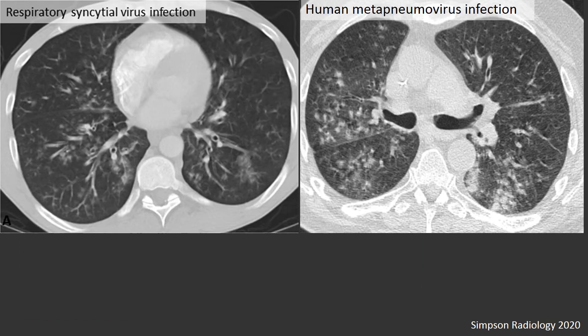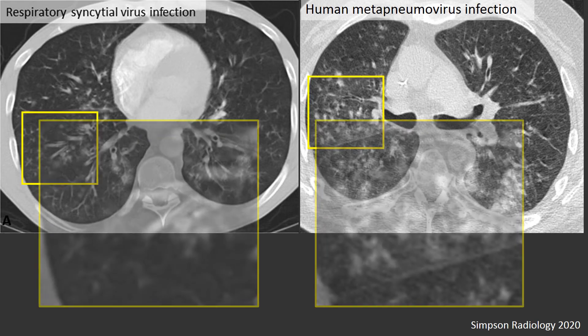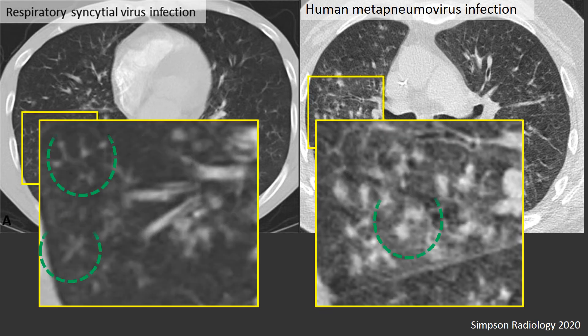Two cases of viral pneumonia — RSV on the left and human metapneumovirus on the right — demonstrate a bronchiolytic pattern within the lung parenchyma, characterized by tree-in-bud opacities and centrilobular nodules. These findings are infrequently reported in COVID-19, though commonly seen in some other viral infections.